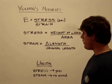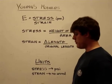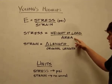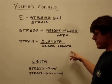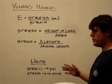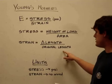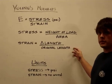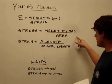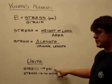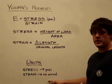Stress is how hard the molecules are pushed together and is determined by the weight of the load over the area. Strain is how far the molecules are pushed together and pulled apart, determined by the change in length over the original length. Stress is measured in pounds per square inch and strain has no units.